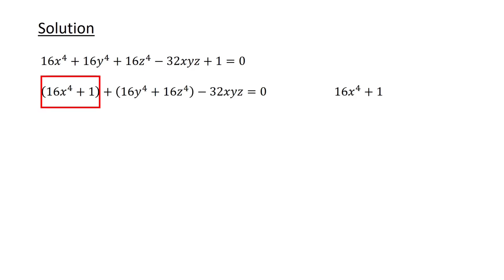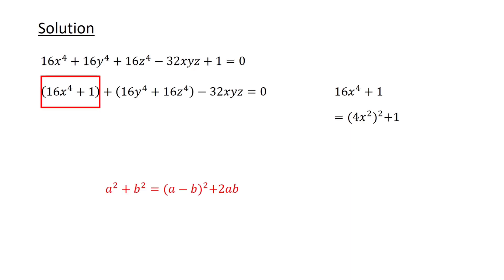Let's examine the first two terms. Rewriting 16x to the power of 4 as (4x squared) whole squared, we complete the square using the identity a squared plus b squared equals (a minus b) whole squared plus 2ab. For our case, a equals 4x squared and b equals 1, so we get (4x squared minus 1) whole squared plus 8x squared.